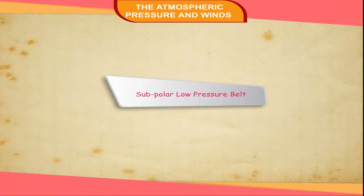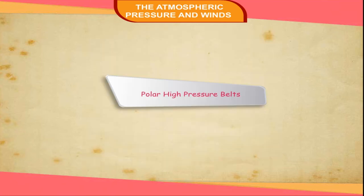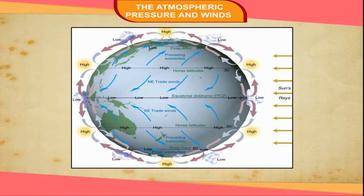Subpolar Low Pressure Belt: This belt extends around 60 degrees latitude in both hemispheres. The rotation of the earth causes low density by swinging the air in the direction of the equator. This results in a partial vacuum, creating a low pressure belt. Here, the air column is so thin that the air can hardly exert any pressure. Polar High Pressure Belts: Around the two poles, the temperature remains low, and thus a permanent high pressure develops over the poles. They are called polar high pressure belts.